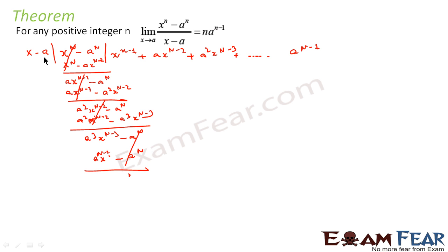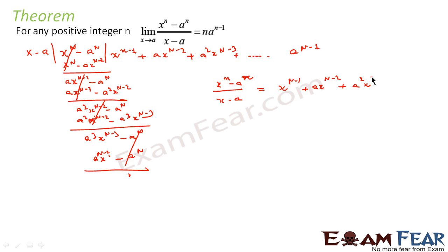So if you see, x minus a divides exactly, and we can say that x^n minus a^n divided by (x minus a) is nothing but x^(n-1) + a·x^(n-2) + a²·x^(n-3) + ... + a^(n-1). That is, the power of x decreases by 1 each time and the power of a increases by 1 each time. This is the value of x^n minus a^n divided by (x minus a).